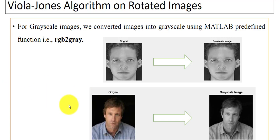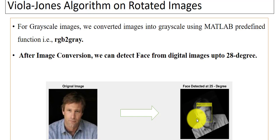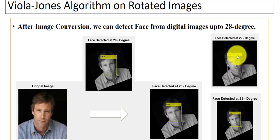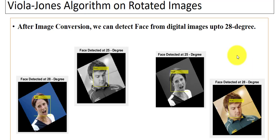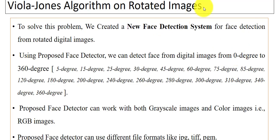As you can see here, we converted the images into grayscale images. Now the next step is: after the conversion, when we apply the face detector using Viola-Jones, you can see we can only detect the face up to 28 degrees, as you can see in the results. But we want to detect the human face from rotated digital images at different angles of rotation. To solve this problem, we created a new face detection system.